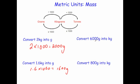Convert 6,000 grams into kilograms. This time we're going from grams into kilograms, so we're going to divide by a thousand. So 6,000 divided by 1,000 would be equal to six kilograms.